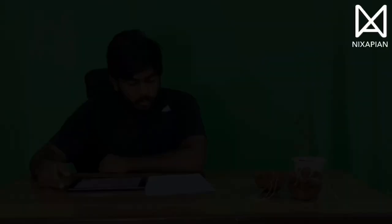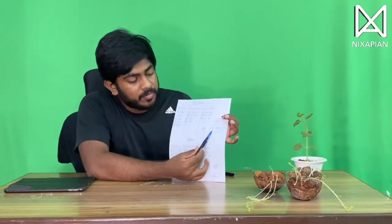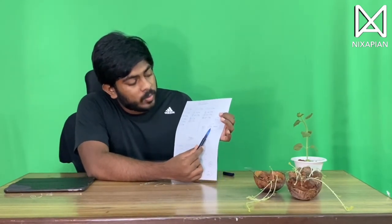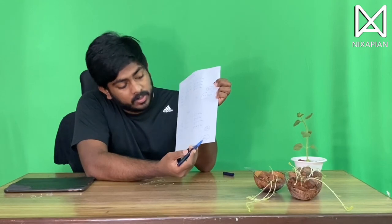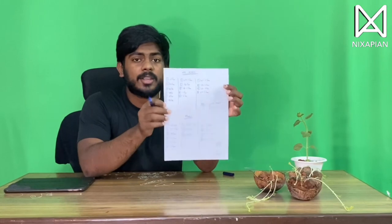Let's take the average now. The average length of plants in which no music was being played is 22.0666 centimeters, whereas the average length of plants in which music was being played is 18 centimeters.